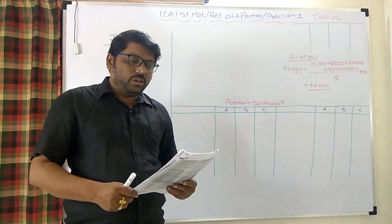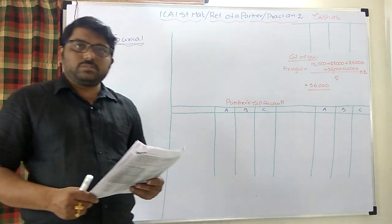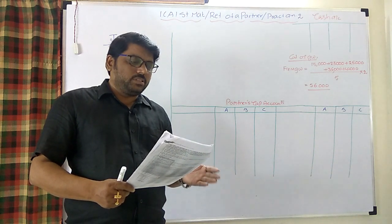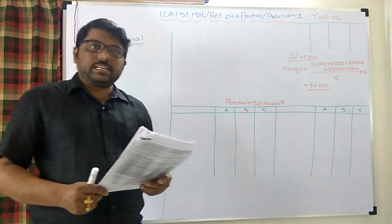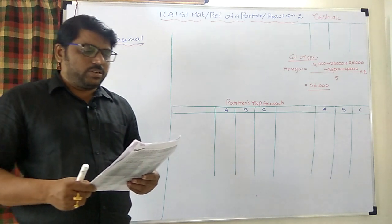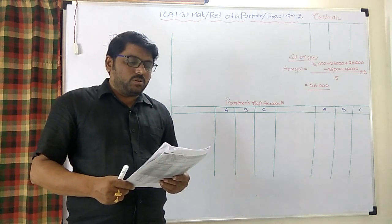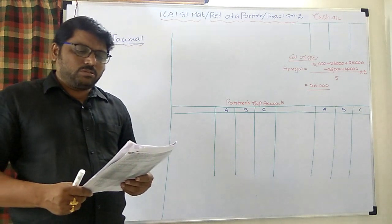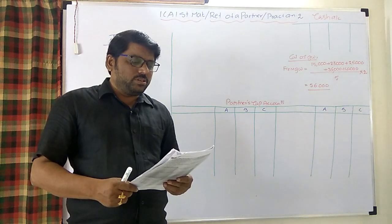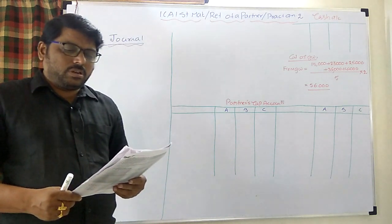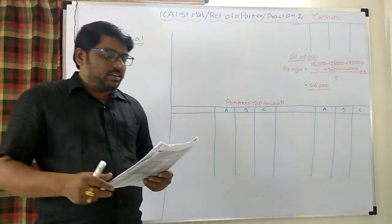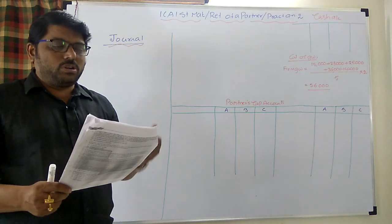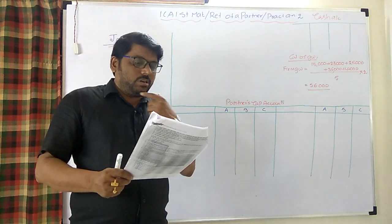The balance sheet shows goodwill, fixtures, stock, debtors, and cash on the asset side, and capitals of A, B, and C along with sundry creditors on the liability side. A decided to retire due to ill health, and a retirement agreement was entered on 31st March 2016.